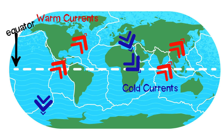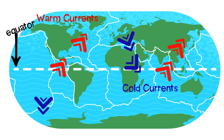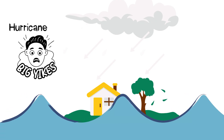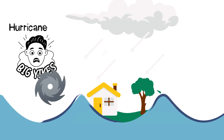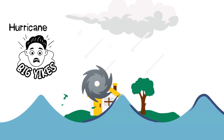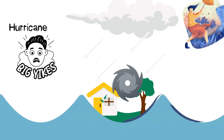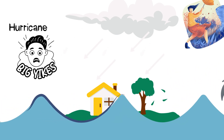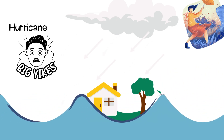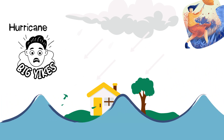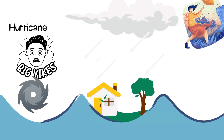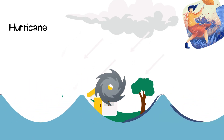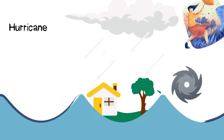When the ocean water gets really warm, it can even fuel massive storms like a hurricane or a typhoon. The warm water evaporates quickly, and that rising moist air releases energy, spinning into a powerful system that can travel thousands of miles.